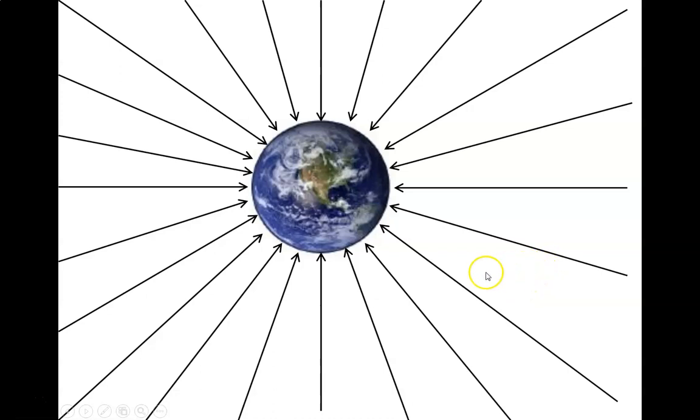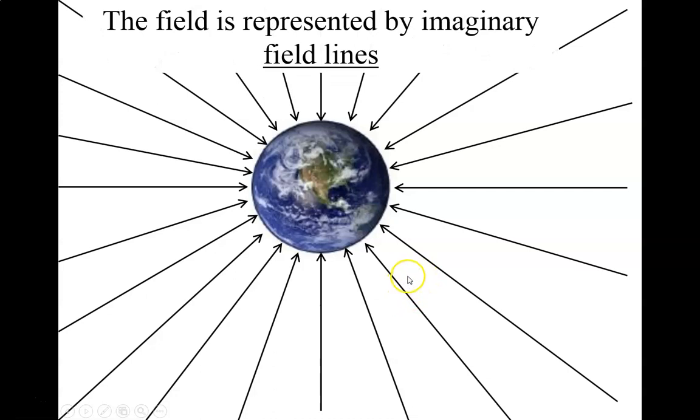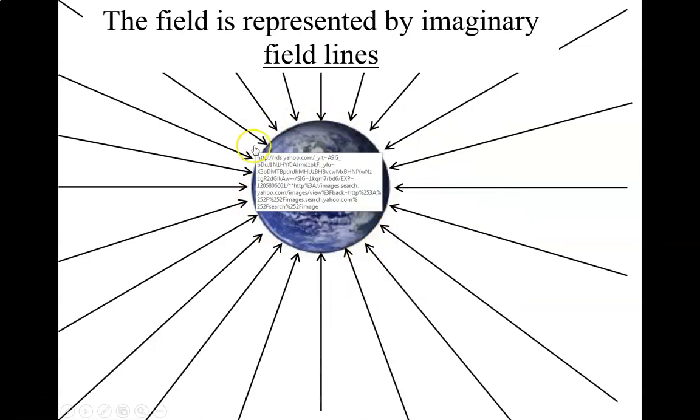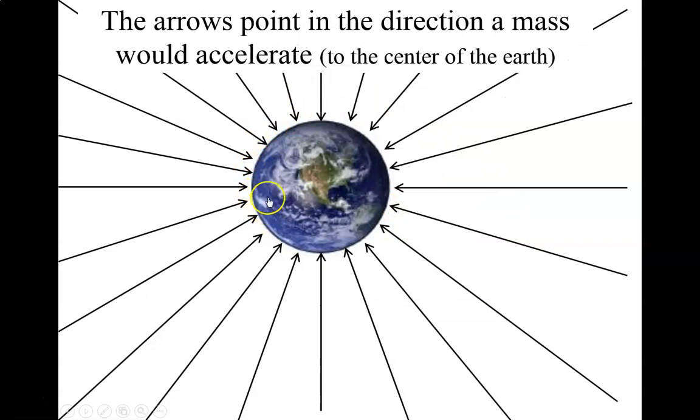We represent force fields with arrows, often called field lines. These are gravitational field lines. And these field lines represent the gravitational field around the Earth. The arrows point into the direction, or point to the direction, that a mass placed in that field would accelerate. So notice they're all pointing towards the center of the Earth. And so that's pretty simple.